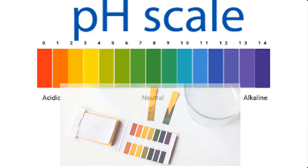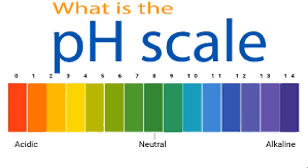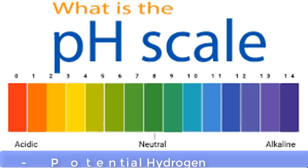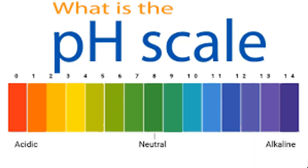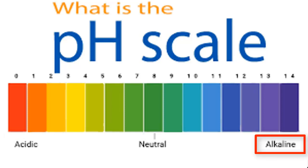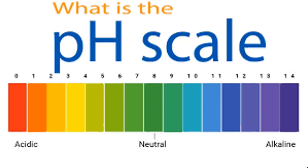Now let's continue by first knowing the meaning of pH of a solution of liquid soap. pH, which literally means potential hydrogen, is a technical term used to describe the degree of acidity or alkalinity of a solution. A solution can either be acidic, neutral, or alkaline. It is usually represented on a number scale starting from 0 to 14.